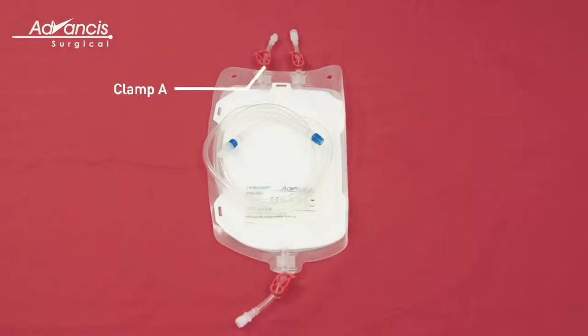Clamp A is for priming the bag. Clamp B is for connecting the intraoperative kit or cardiopulmonary bypass machine to fill the bag with blood for processing. Clamp C is for draining into the blood transfusion bag after processing.